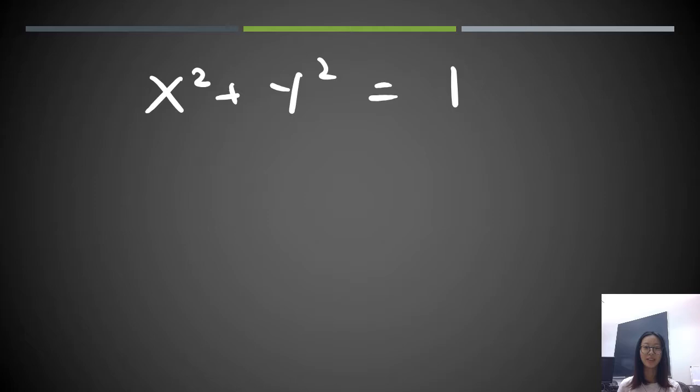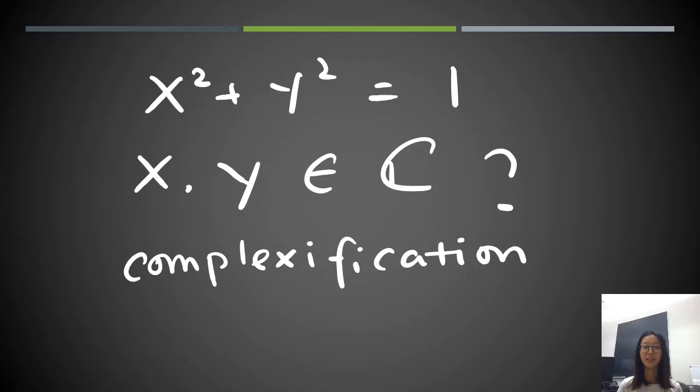So, let's look at the equation that we saw just now: x² + y² = 1. It looks very simple. Just now we asked that x and y belong to real numbers. And now we want to know what will happen if we allow them to be complex numbers. And in geometry, this action has a very special name, the complexification of a circle.